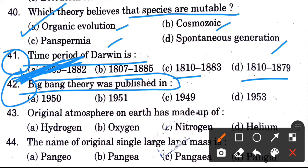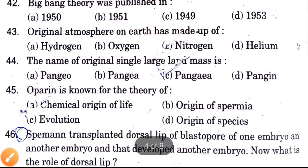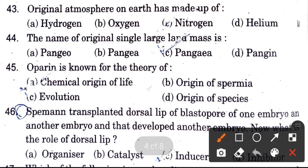Big Bang Theory was published in — this is the easiest and most repeated question. In which year was the Big Bang Theory first published? Options are 1950, 1951, 1949, 1953. The answer is 1950.